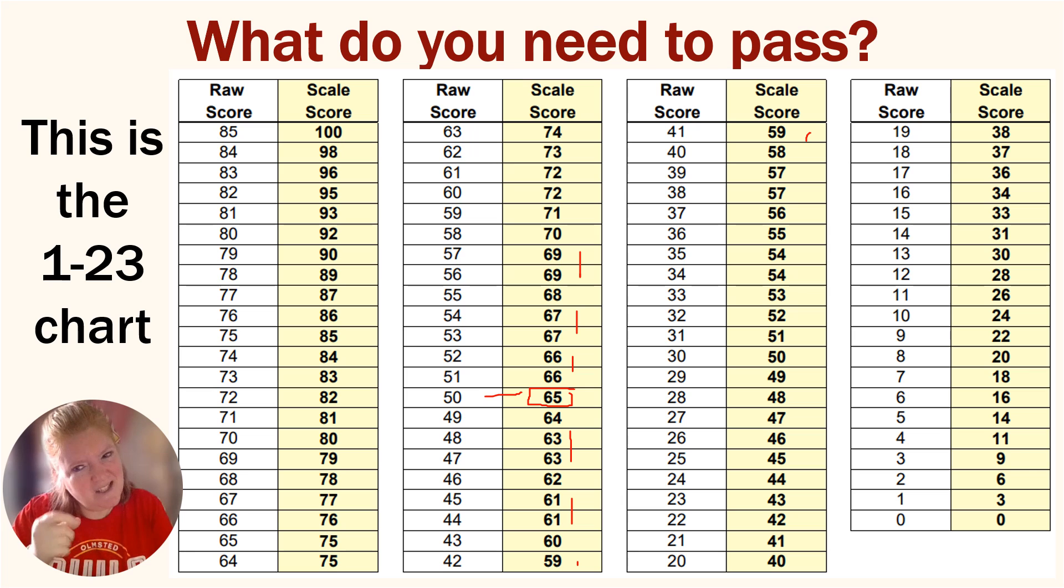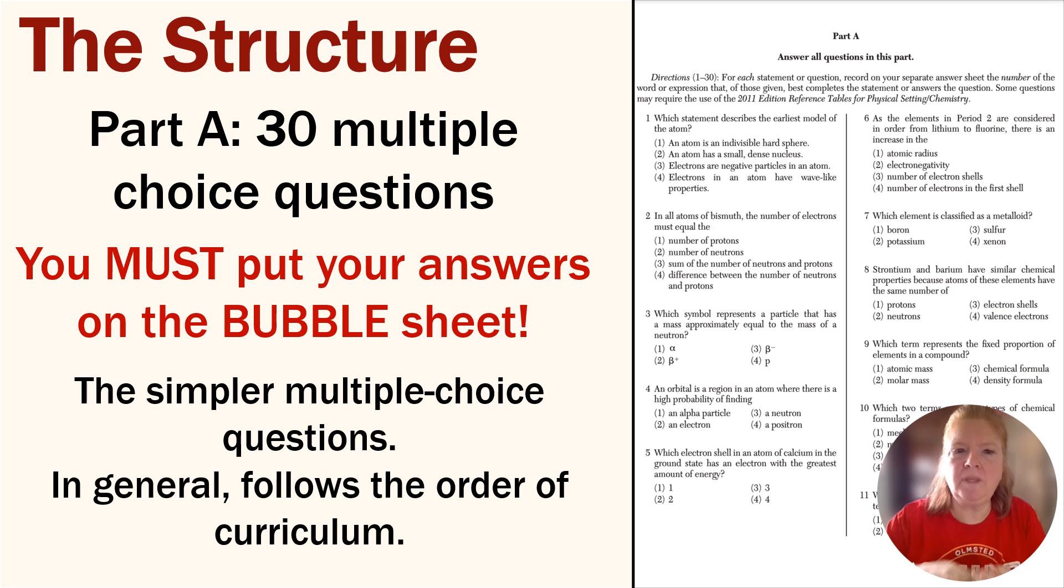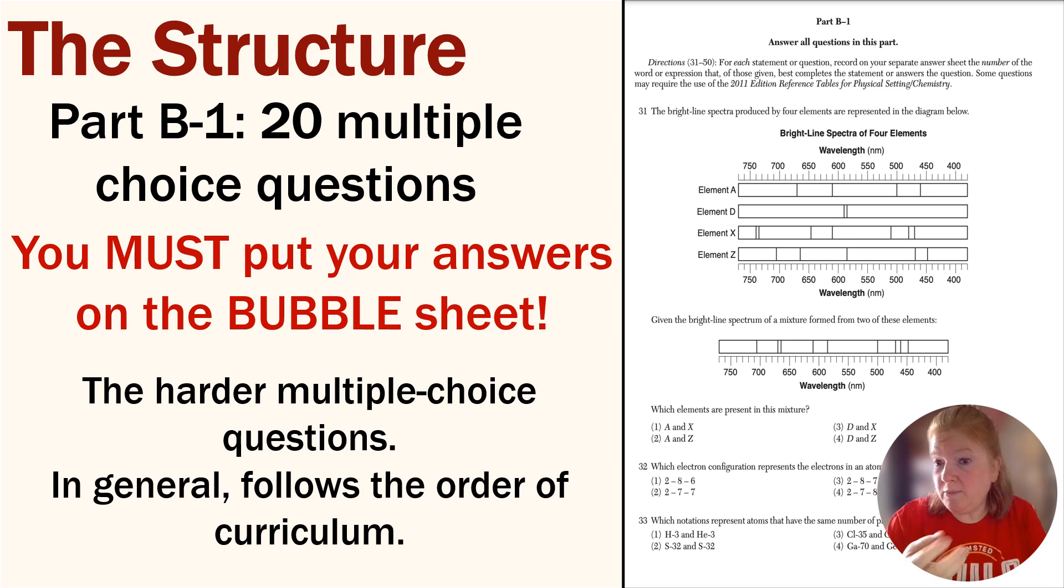It's typically around 50. It might be a little bit above or potentially a little bit below, but on average you can count on you need 50 out of 85 points to pass. That's not really a curve because that's almost basically passing. Part A is 30 multiple choice questions. These are the simpler multiple choice questions. It shouldn't be really multi-step. Some is just information from your head, but it might be a reference table question. In general, it follows the order of the curriculum from atomic theory through nuclear chemistry.